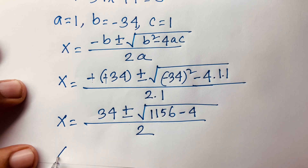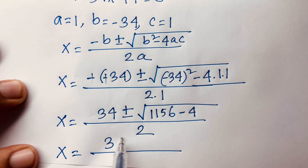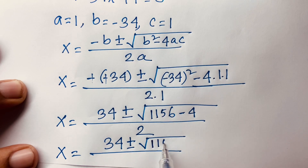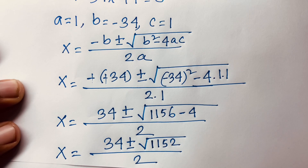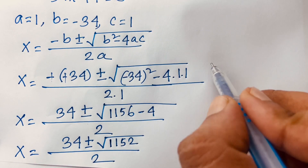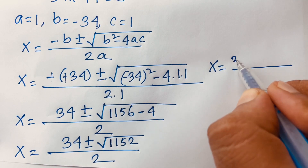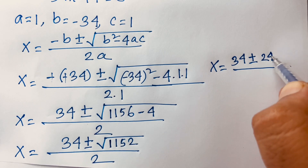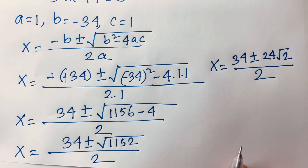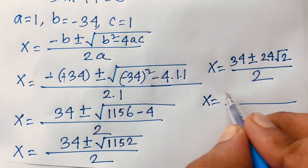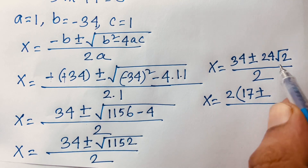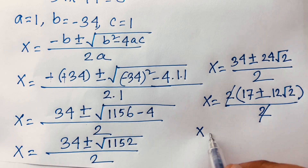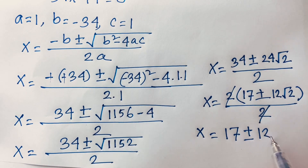I can say X is equal to 34 plus or minus square root of 1156 minus 4, which is 1152, all over 2. Then 2 is common, so dividing gives 17 plus or minus square root of 288 over 2, which simplifies to 17 plus or minus 12 square root 2.